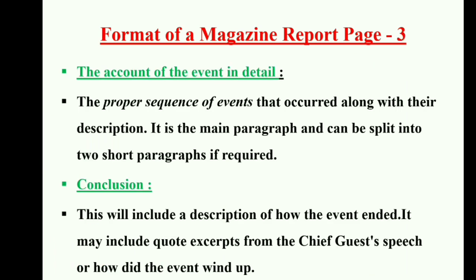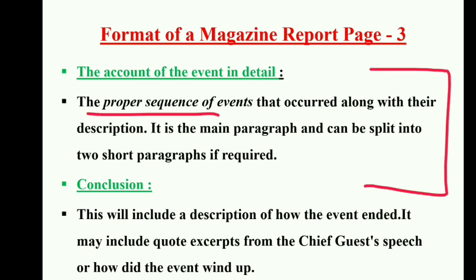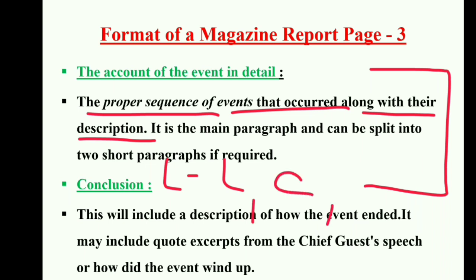Let's discuss in detail regarding the detail paragraph. Here, the proper sequence of events that occurred along with their description — you have to mention them. First of all, whenever a program starts, we start with the lighting of the lamp. Then comes garlanding of the chief guest. Then comes different programs one by one. You have to follow that sequence and make the reader aware about the events of the function. It should not be in a jumbled way — you cannot mix up all the events, you have to write in sequence.